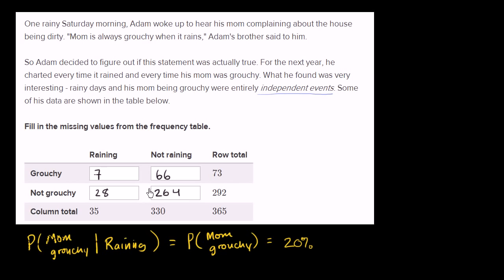So the key realization here is what he's saying he found was very interesting. Rainy days and his mom being grouchy were entirely independent events. That means that the probability of his mom being grouchy shouldn't matter whether it's raining or not. It should be the same probability whether it's raining or not.